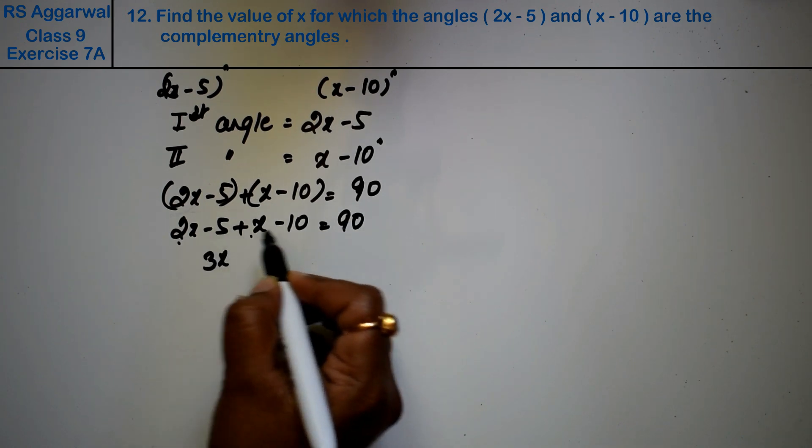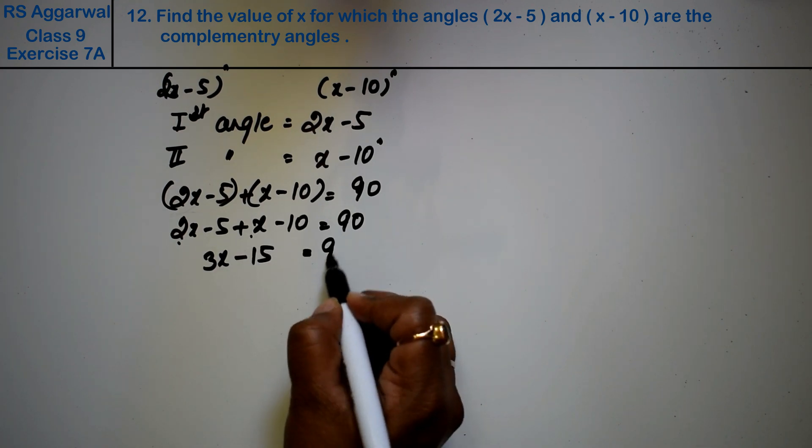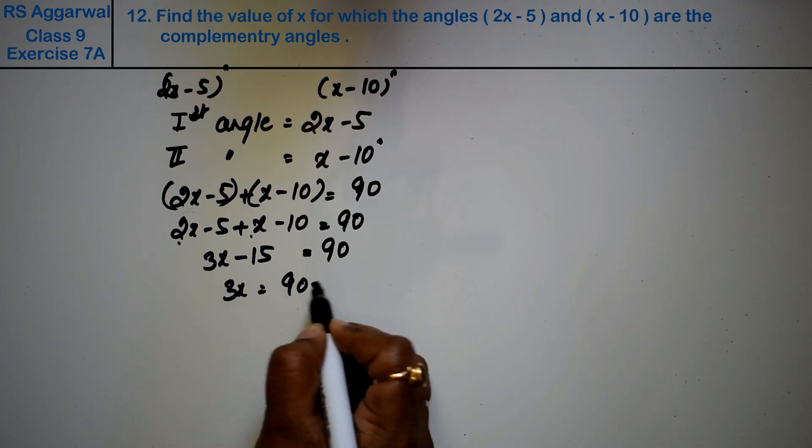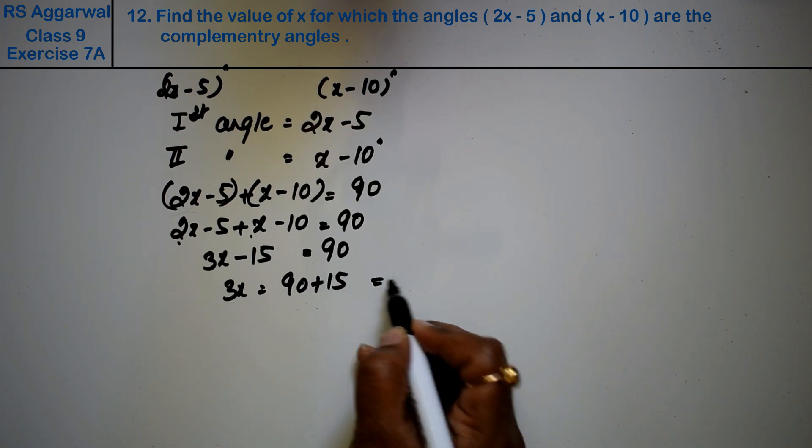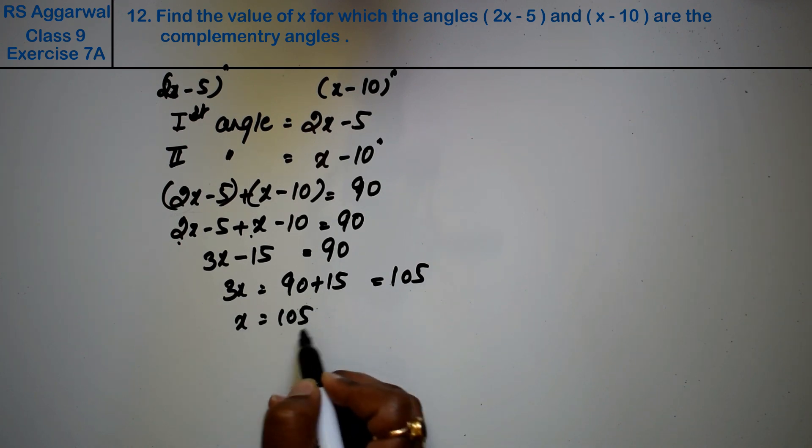Simplifying: 2x + x is 3x, and -5 - 10 gives us -15. So 3x - 15 = 90. Moving -15 to the other side: 3x = 90 + 15 = 105. Therefore, x = 105/3 = 35.